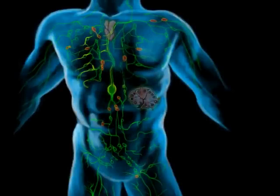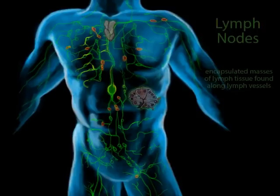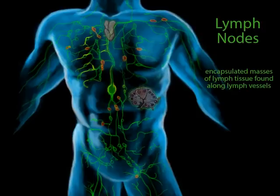Some lymph tissue is very diffuse, with no clear boundaries — you can actually feel some when you rub your lower inner lip with your tongue. Others are more organized into groups, and these are called lymph nodes. Lymph nodes have three functions. First, they are testing stations — they monitor the blood by receiving samples of the blood plasma.